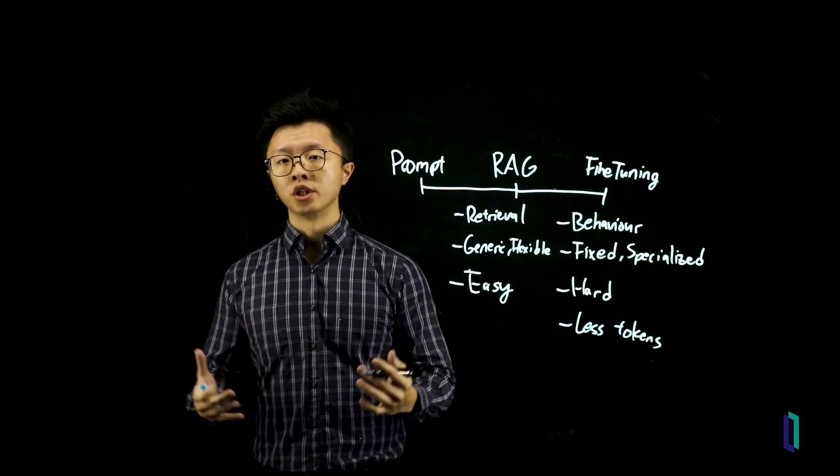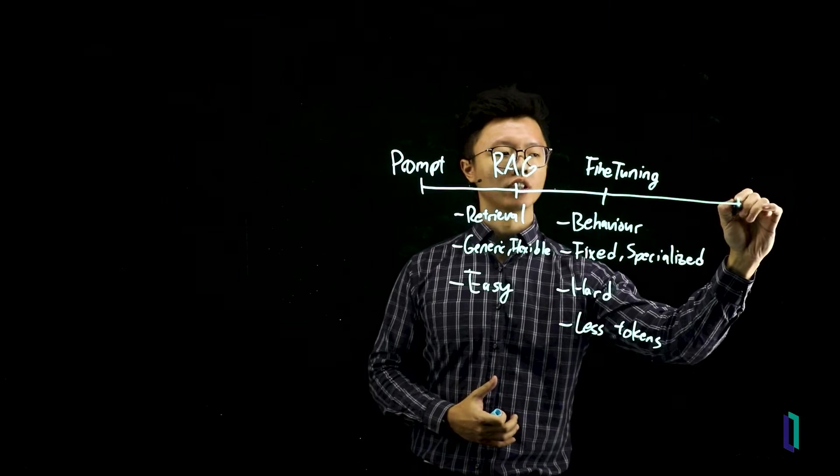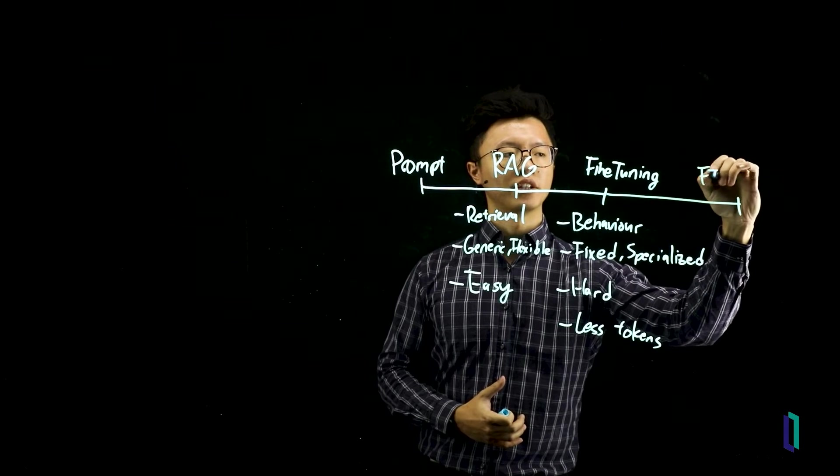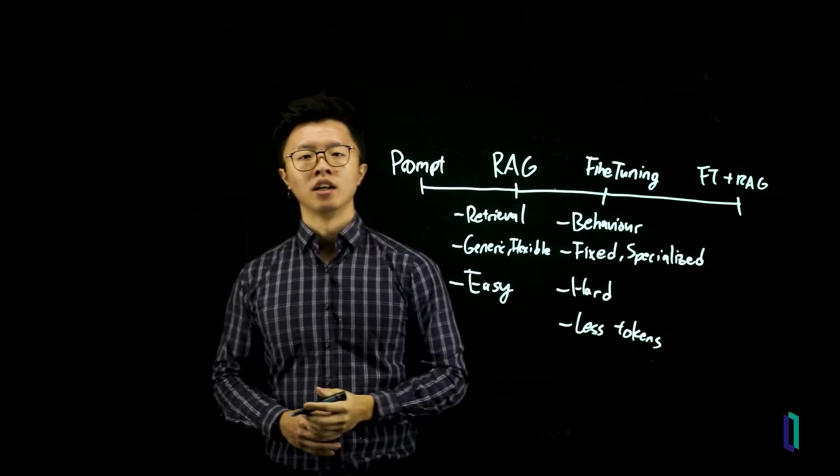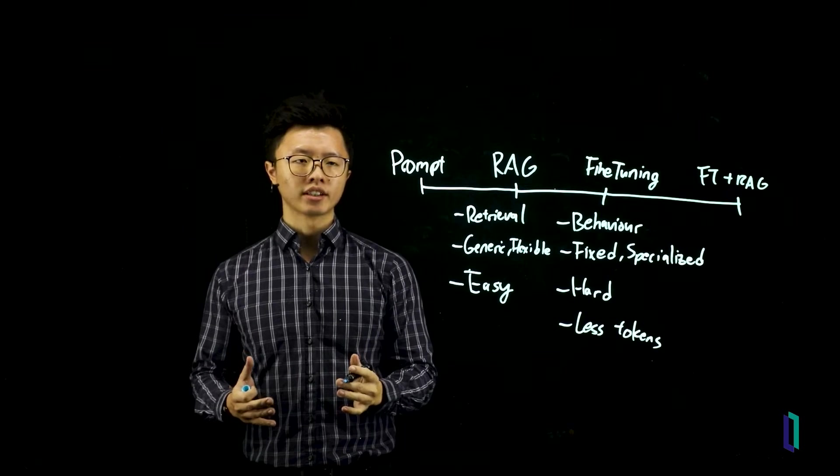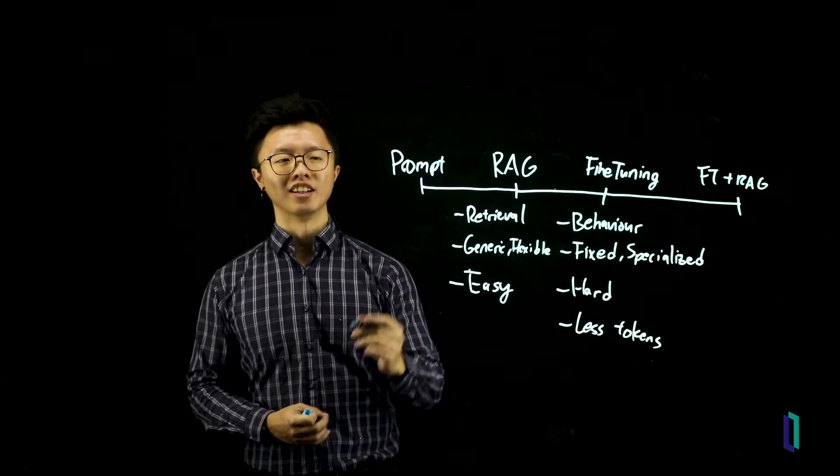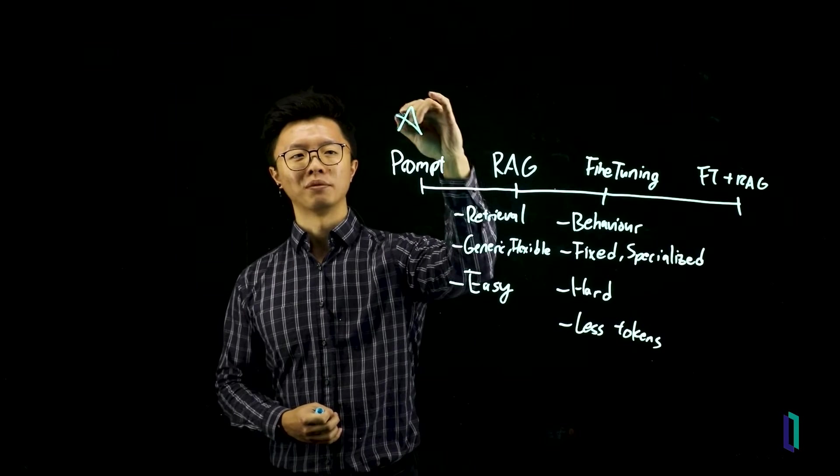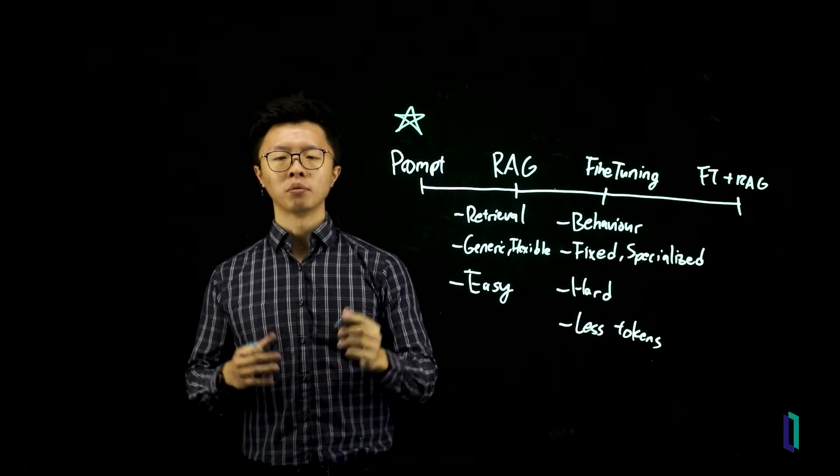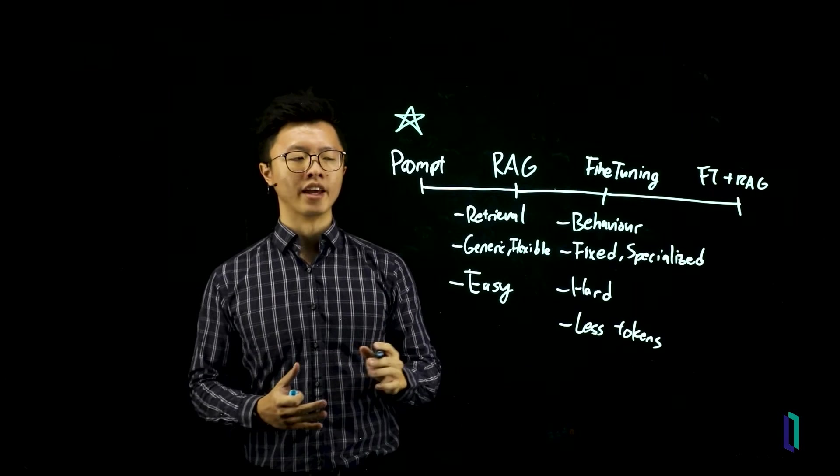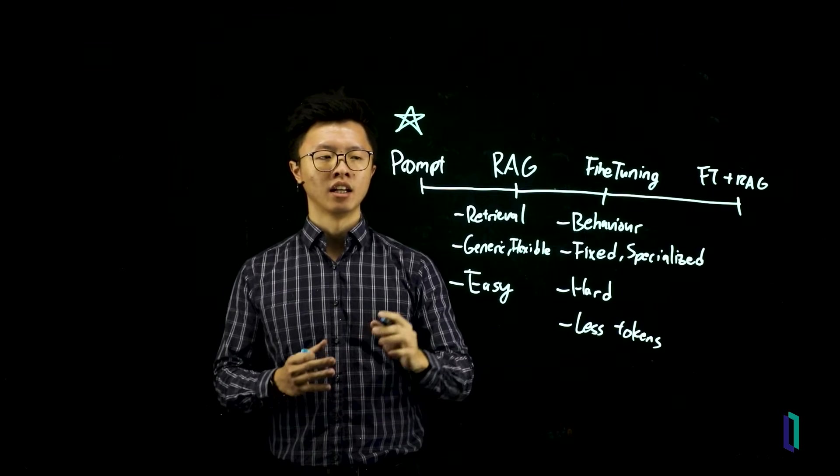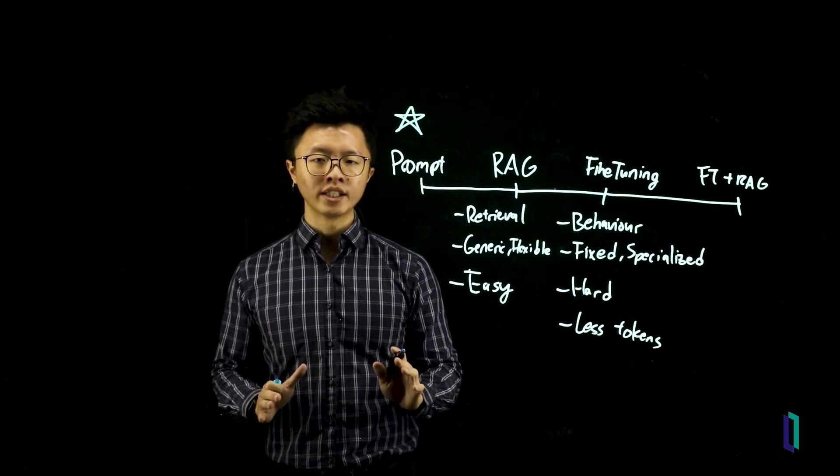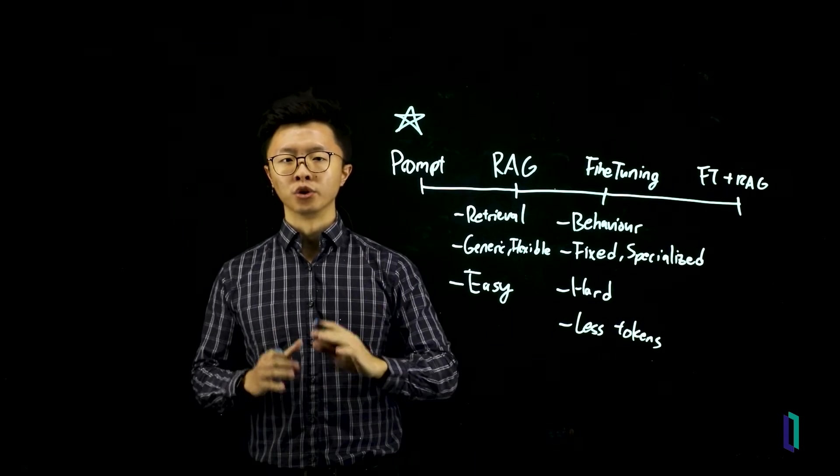Now, some more mature Gen AI systems will require the best of both worlds. And that's when they do fine-tuning with RAG. So for your Gen AI project, you should always start, no matter what, with prompt engineering and get to a point where you require something better. And then you start to choose between RAG and fine-tuning. Now, RAG is almost always going to cover your use case.